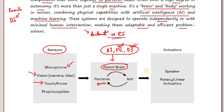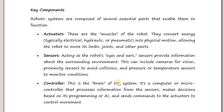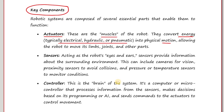Just like humans, a robot also has arms and muscles — here it has speakers, or rotary or linear actuators. The key components: first is the actuator, which is basically the muscles of the robot. Just like in humans, these muscles convert energy — typically electrical, hydraulic or pneumatic — into physical motion, thereby allowing the robot to move its limbs, joints and other parts.